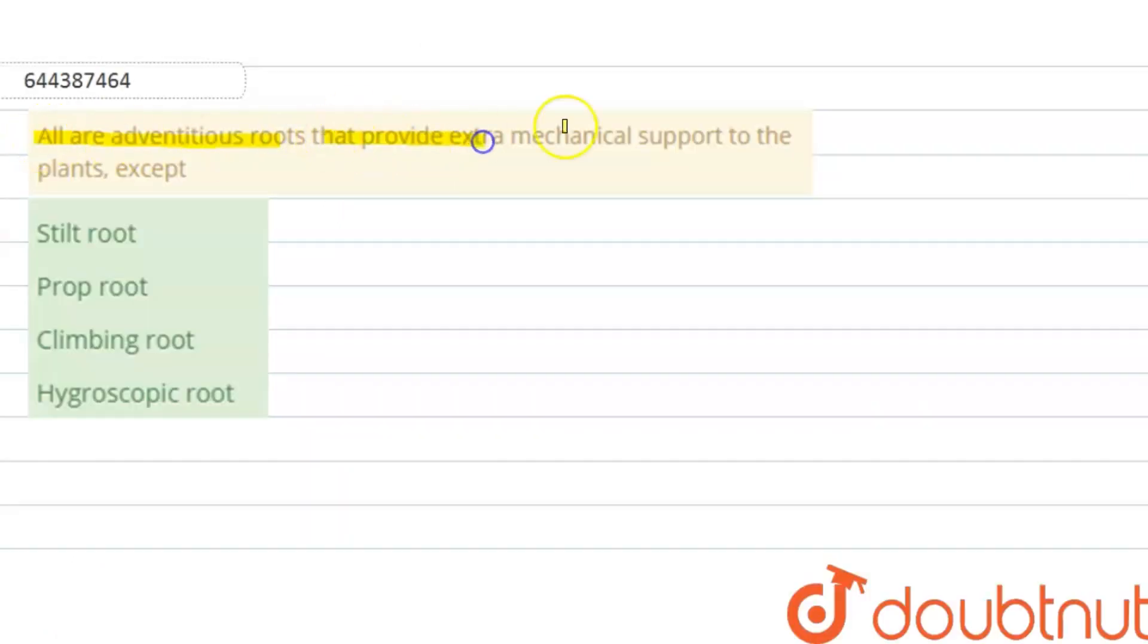All are advantageous roots that provide extra mechanical support to the plants except - and the options are stilt root, prop root, climbing root and hygroscopic root. Okay, so first option, that is stilt root.